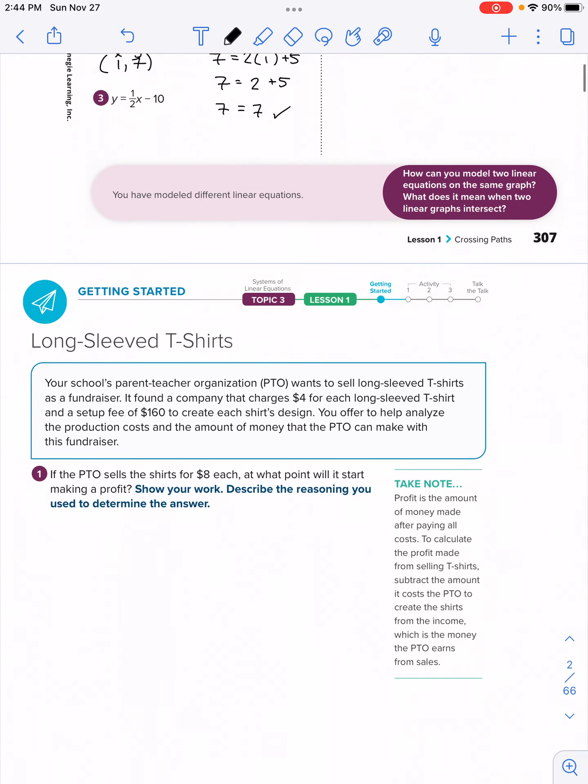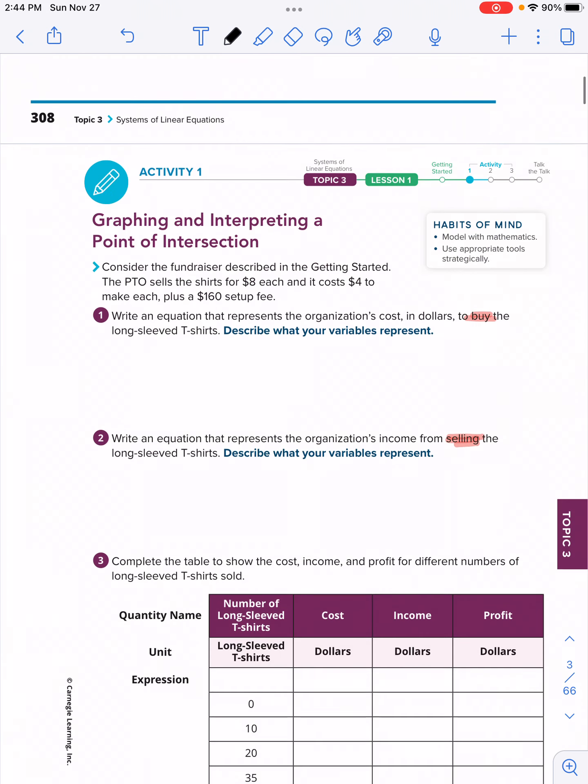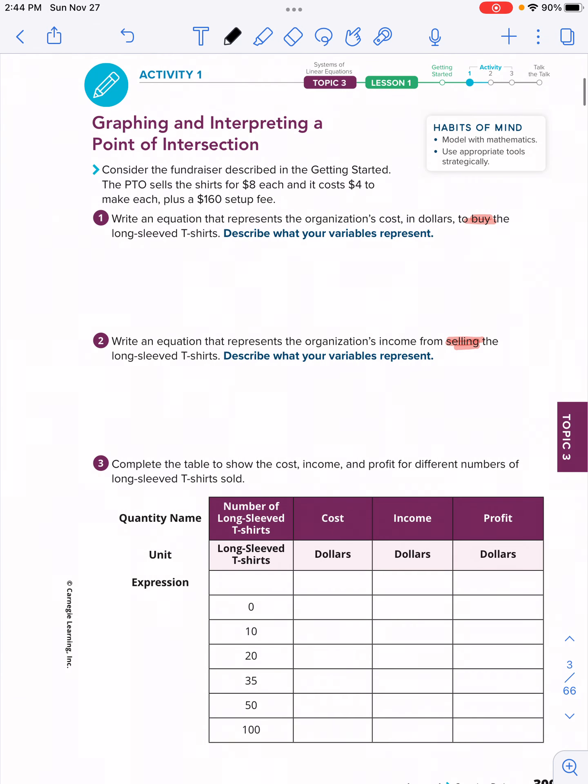There's an infinite number of combinations of ordered pairs for x and y that would make this equation true, but this is what a solution means. We're going to skip 308, getting started. We're going to go right into activity 1, and this video will be focusing only on activity 1.